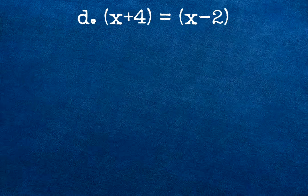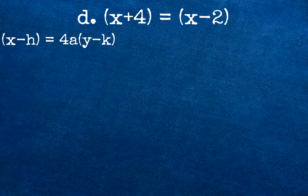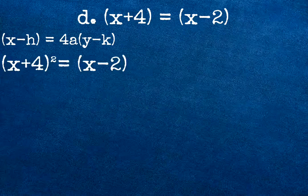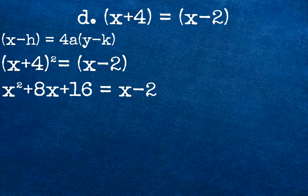For our last example, quantity x plus 4 squared equals quantity x minus 2. The equation is written as quantity x minus h squared equals 4a times quantity y minus k. To get the general form, we are going to multiply x by itself, x to positive 4 times 2, and 4 by itself. The answer will be x squared plus 8x plus 16 equals x minus 2.